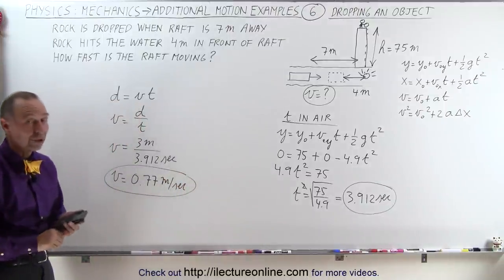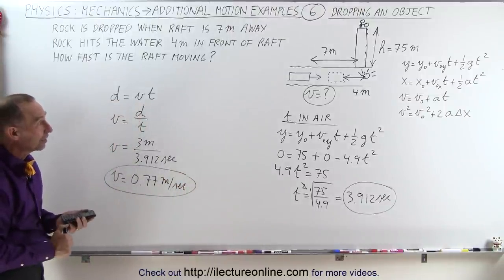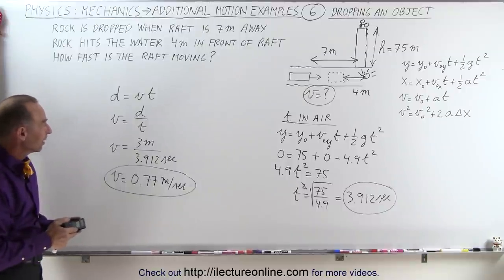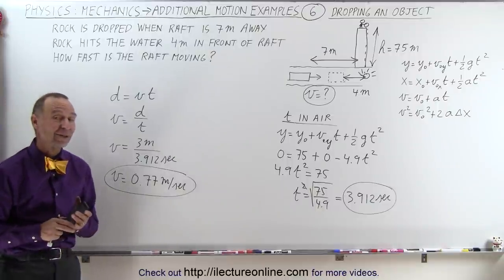So that would be the velocity of the raft. In that case, now that we've tried it, we should drop another rock when the raft is roughly 3 meters away. At that point we'll probably hit the raft, and that's how it's done.